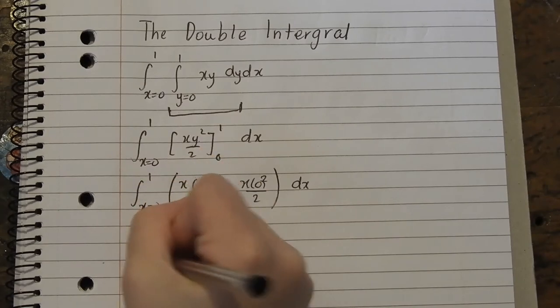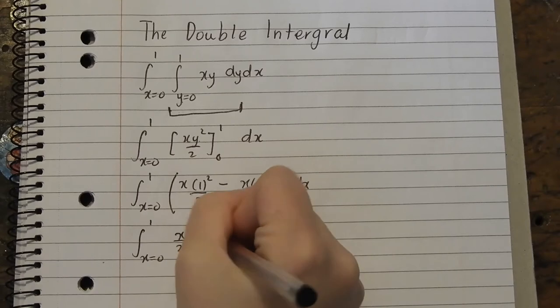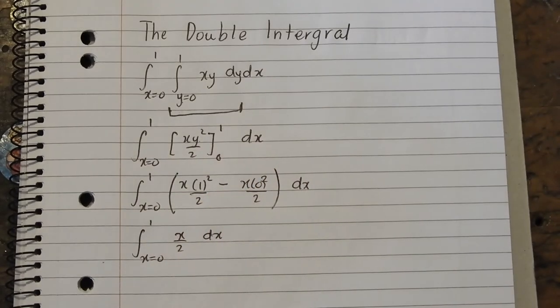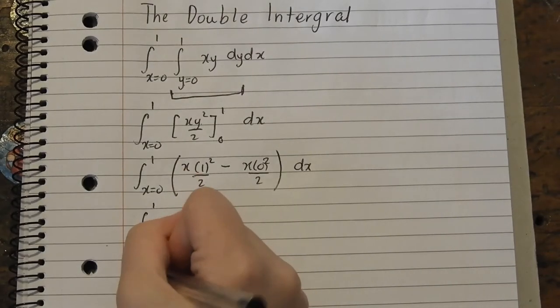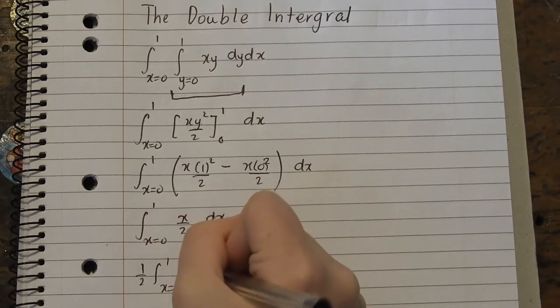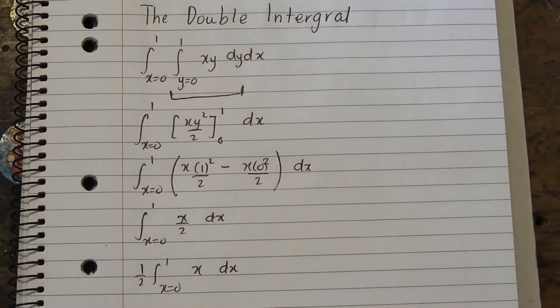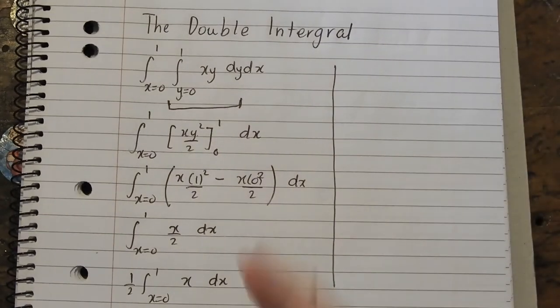So we've got the integration of 1, x equals 0, because this hasn't changed out the front, x on 2 dx. That's what we've got. So now we need to integrate that. So we pull out the half to make things easier. x dx and the integration of x dx. I'll write up here, just to leave it all on the page.